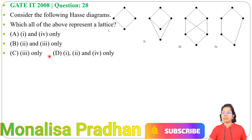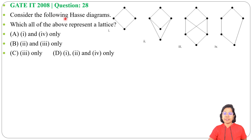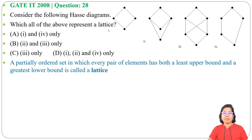Let's solve a previous question on lattice. This question was asked in GATE IT 2008, question number 28. Four Hasse diagrams are given; which of them represents a lattice? First, understand what a lattice is: a poset is called a lattice if for every pair we can find the greatest lower bound (GLB) and least upper bound (LUB). If we can find both join and meet for every pair, then it's a lattice.